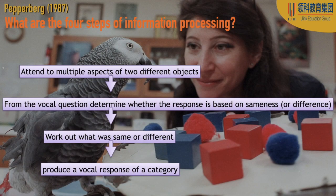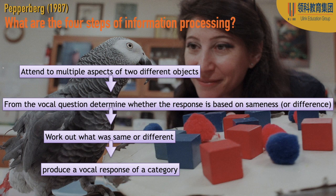There was a particularly challenging past paper question about how it takes four steps for Alex to process information. Essentially, he's got to attend to multiple characteristics of objects, then figure out what the question being asked actually is — is he being asked if objects are the same or different? Then he has to work out the cognition of what is actually same and what's actually different, and finally formulate a vocal response.